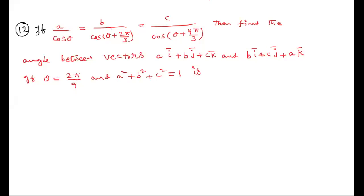Now see the twelfth question. If A by cos theta equals B by cos(theta + 2π/3) equals C by cos(theta + 4π/3), then find the angle between two vectors, given theta = 2π/9 and A² + B² + C² = 1. This is a mixed trigonometry and vectors conceptual question.